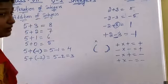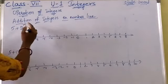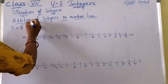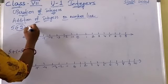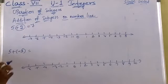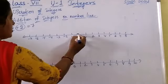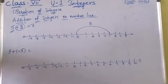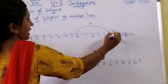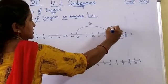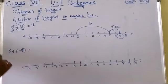Now we will see addition of integers on the number line. Take 5 plus 2 — I am adding a positive integer to 5. The answer is 7. On the number line, you represent 5 by going from 0 to 5. Then adding plus 2 means you move to the right side — positive 1, 2 — and you reach 7. So whenever you are adding a positive integer, you move right on the number line.